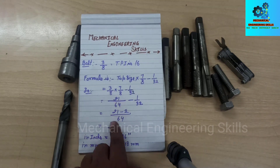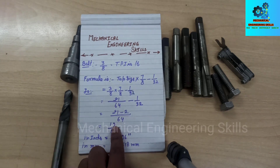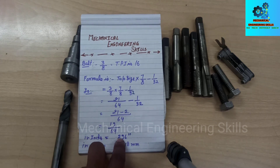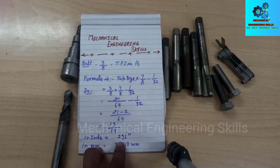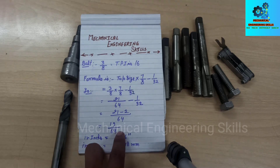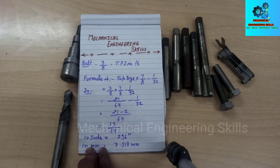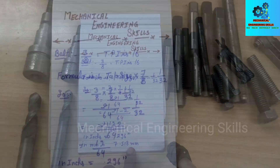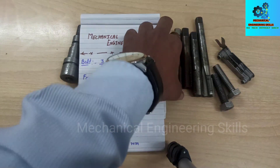After solving the equation, the tap drill size is 19/64 or 0.296 inches. If you don't have drill size in inches, you can convert it to metric: the mm equivalent is 7.518 mm. You can use a 7.5 or 7.6 mm drill size.